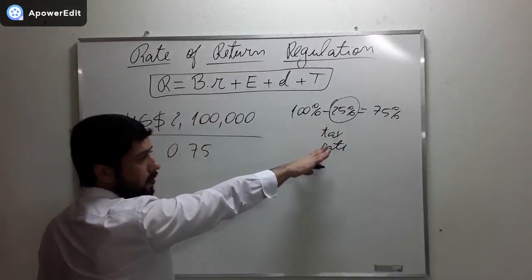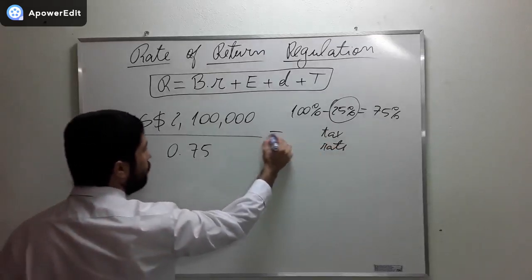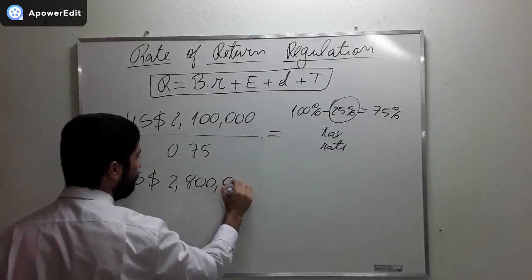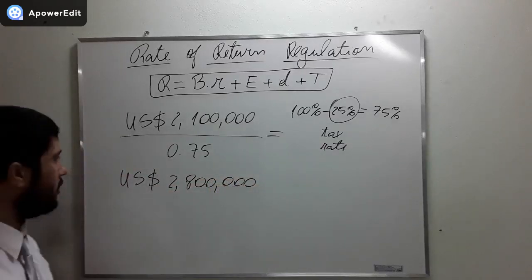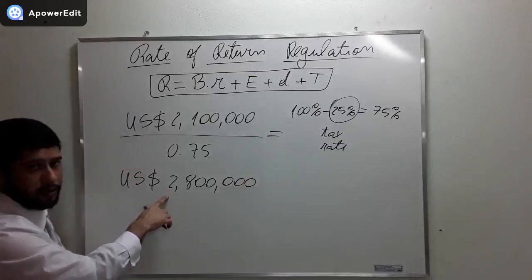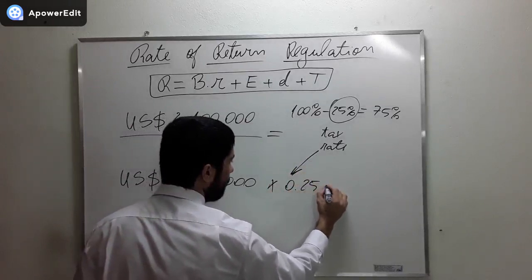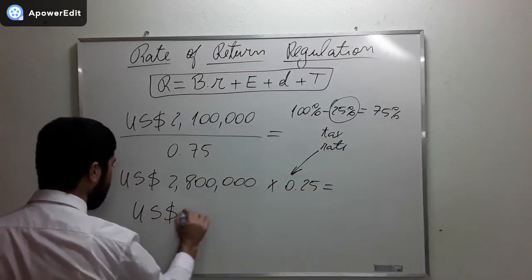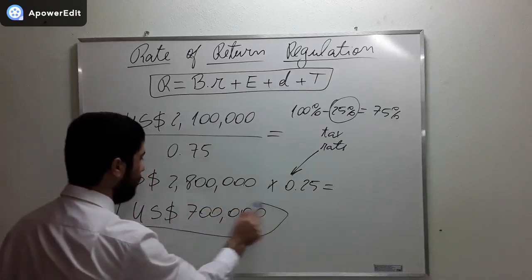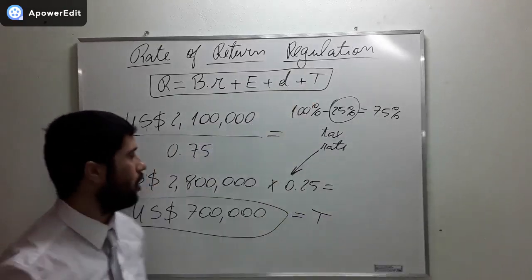If we divide this, what we get is $2,800,000 USD. This is the pre-tax profit. If we apply the tax rate here, we get the income tax, which is $700,000 USD, and this is T from this expression here.